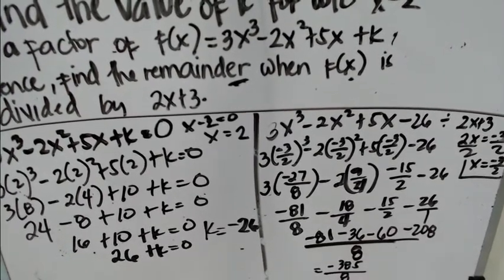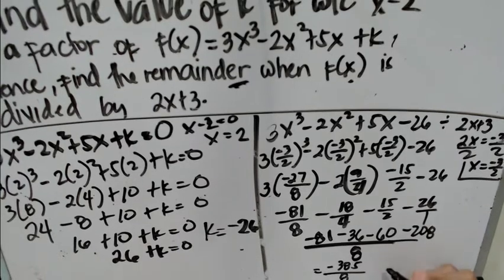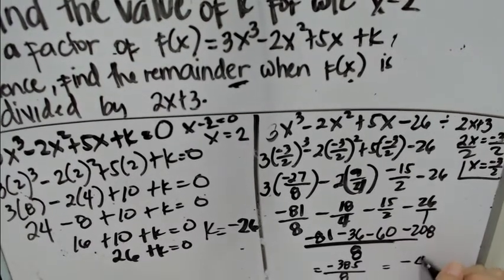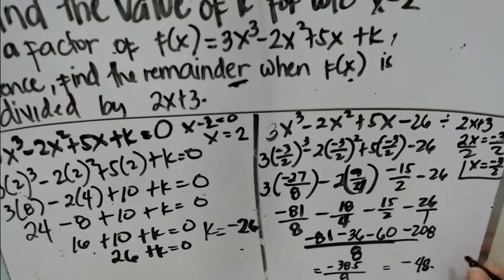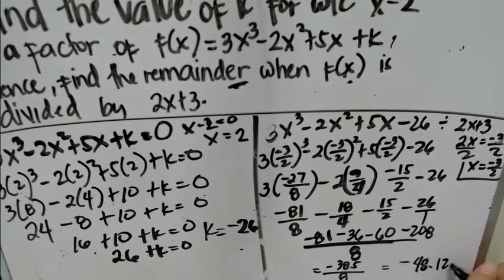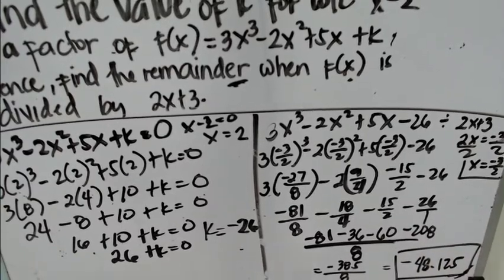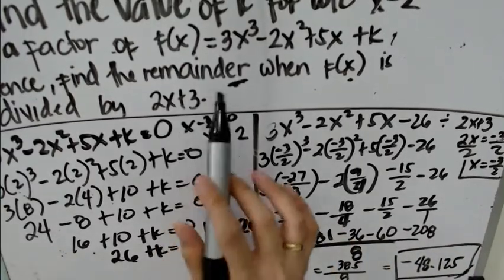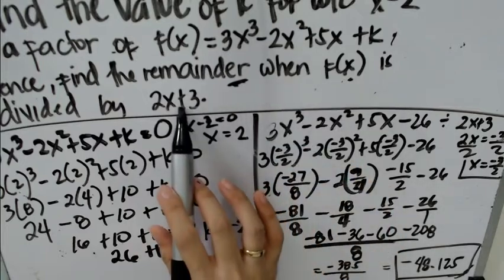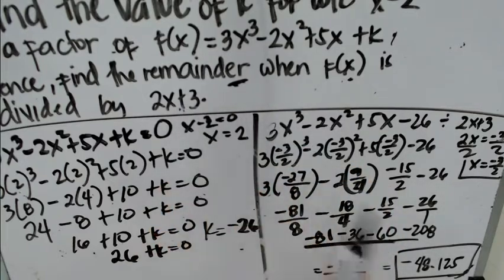We divide negative 385 by 8. Using your calculator, we get negative 48.125. The remainder when f of x is divided by 2x plus 3 is negative 48.125.